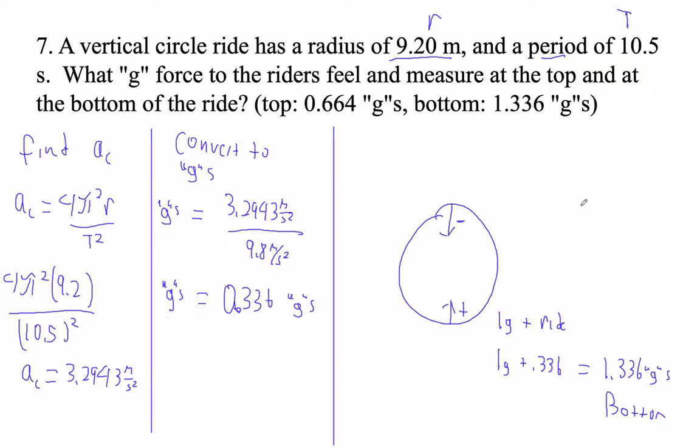At the top, we're accelerating down. So 1g minus the ride equals 1g minus 0.336. So 1 minus the answer I got is 0.664. So the top is going to be 0.664 g's.